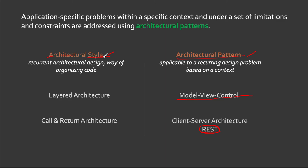Contrary to a pattern, the architectural style doesn't exist to solve a problem. For example, pipe-and-filter doesn't solve any specific problem — it is just a way of organizing your code. Similarly, client-server, main program and subroutine, abstract data types, and object-oriented are all architectural styles. A single architecture can contain several architectural styles, and each architectural style can make use of several architectural patterns. Hopefully, I gave justice in differentiating architectural style and architectural pattern.